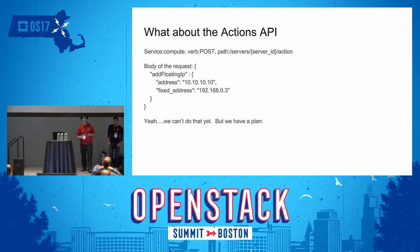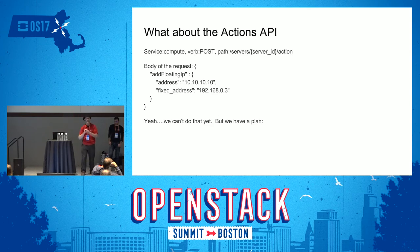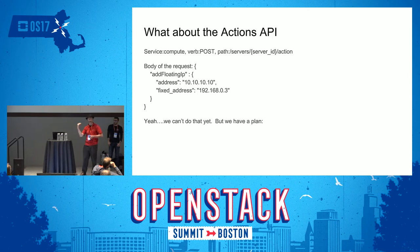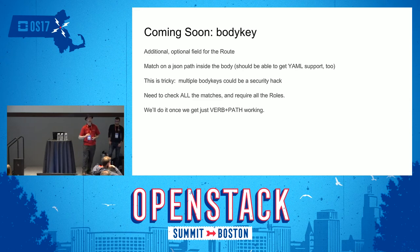What about the Actions API? There is an API in Nova that's a little SOAP-like. In this case it's called the Actions API — the URL is a POST to path colon service, server ID, then whatever the action is. The method you're trying to do is actually in the body of the request. We can't handle that yet, but we do have a plan as a phase two: specifying a body key, searching through a JSON document, and doing a match. Getting that right is tricky, so we'll do it once verb plus path is working alone.